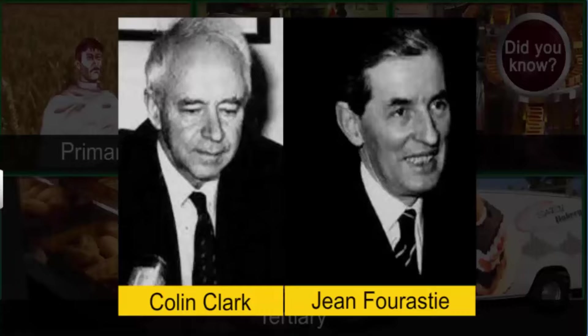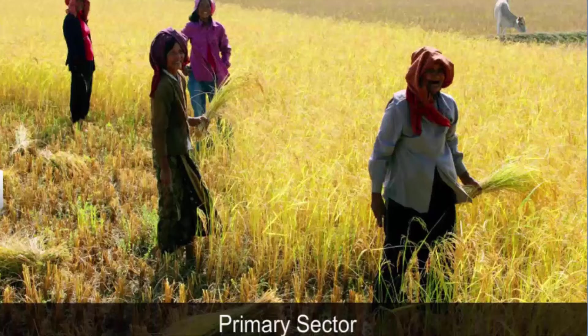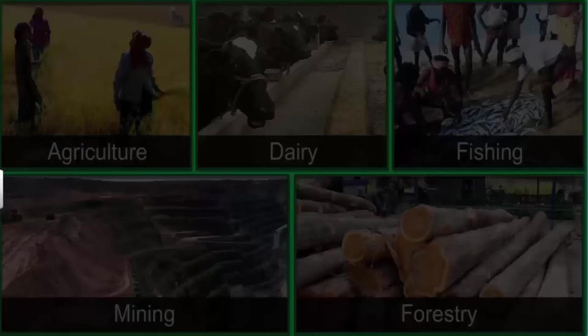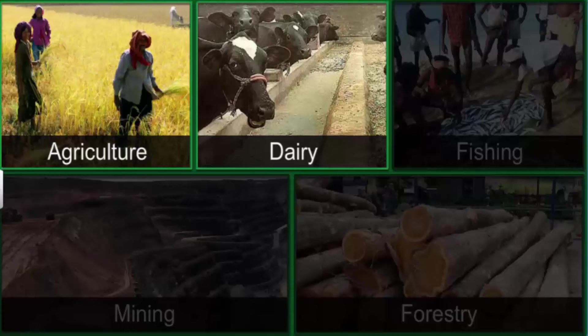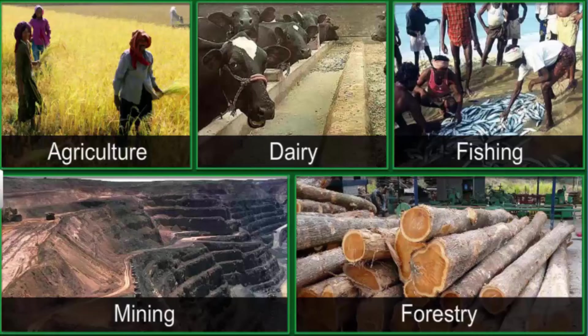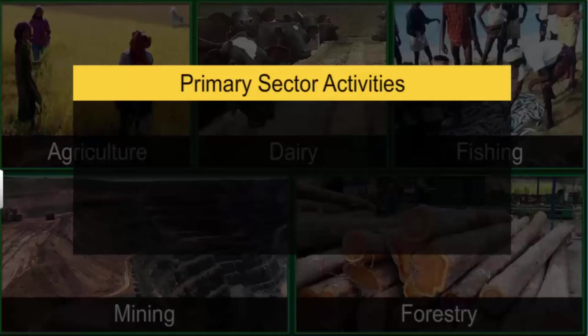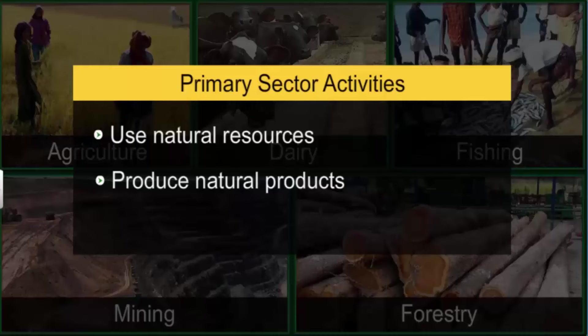Activities like agriculture are called primary sector activities. Besides agriculture, primary sector activities include animal husbandry like dairy farming and poultry farms, fishing, and forestry. All primary sector activities use natural resources to produce natural products. Since the largest number of natural products comes from agriculture, the primary sector is also called the agriculture and related sector.